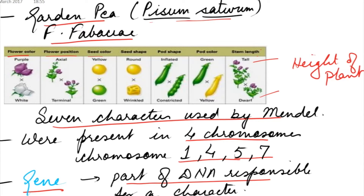Similarly, green and yellow are the two alleles of pod color. Inflated and constricted are the two alleles of pod shape. Round and wrinkled are the two alleles of seed shape. Yellow and green are the two alleles of seed color. Axial and terminal are the two alleles of flower position. Purple and white are the two alleles of flower color.